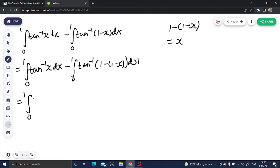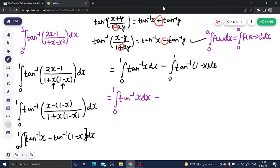0 to 1 tan inverse x dx minus 0 to 1 tan inverse x dx. This simplified to x, so this integral simplified to tan inverse x dx. That's simple because this 2 will get cancelled out and you will finally get a 0. Cool question.